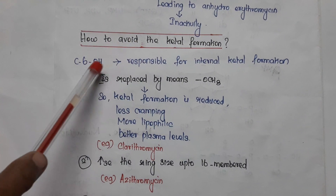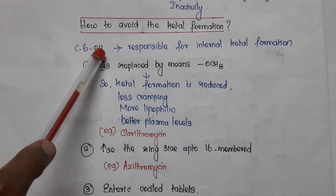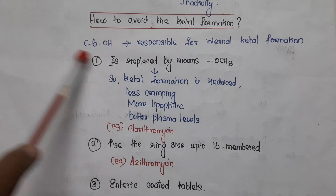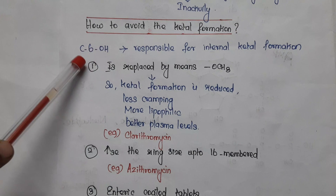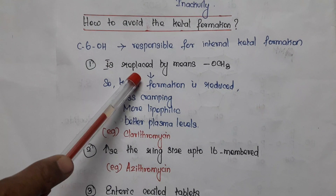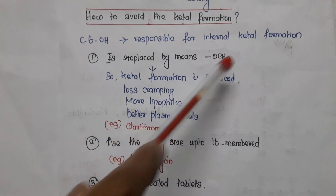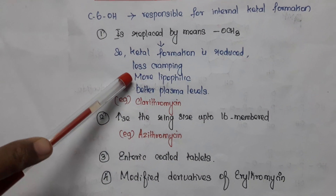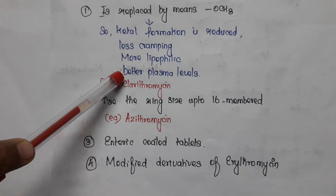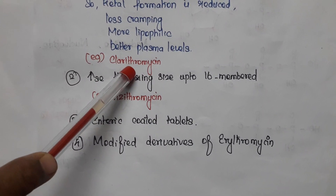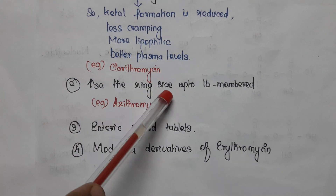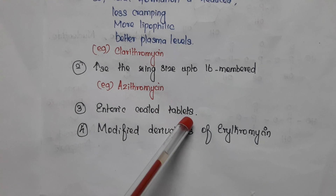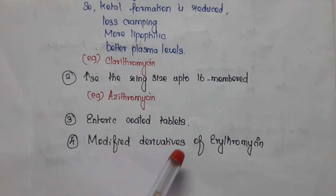There are three groups responsible for ketal formation: the hydroxy group at the 6th portion, the ketone at the 9th portion, and the hydroxy group at the 12th portion. The major one responsible is the hydroxy group at the 6th portion. This can be replaced by a methoxy group — if replaced, ketal formation is reduced, causing less cramping, and the compound becomes more lipophilic with better plasma levels. The example for this is clarithromycin. Alternatively, we can increase the ring size to 16 members — example: azithromycin — or use enteric-coated tablets, or use modified derivatives of erythromycin.